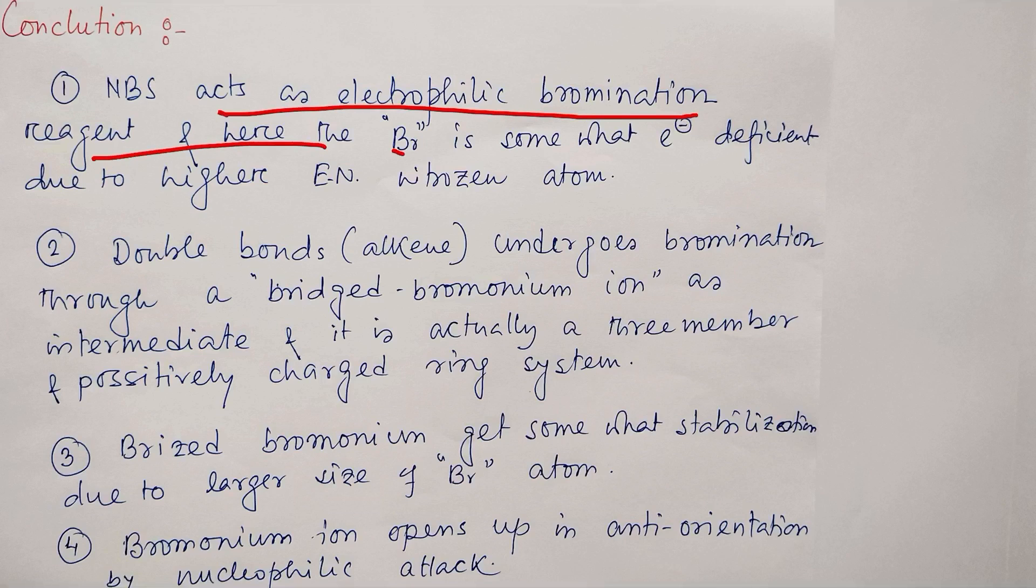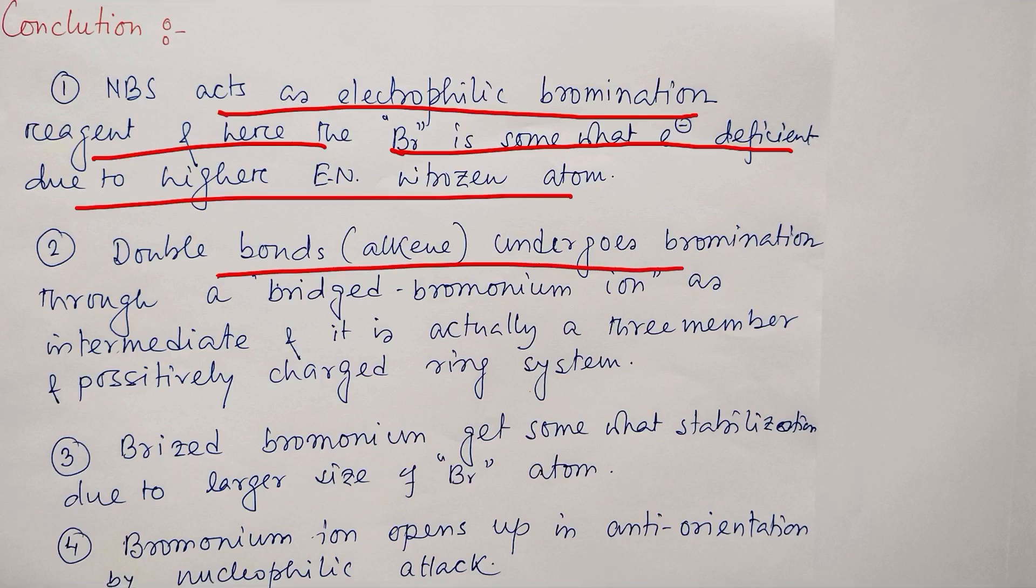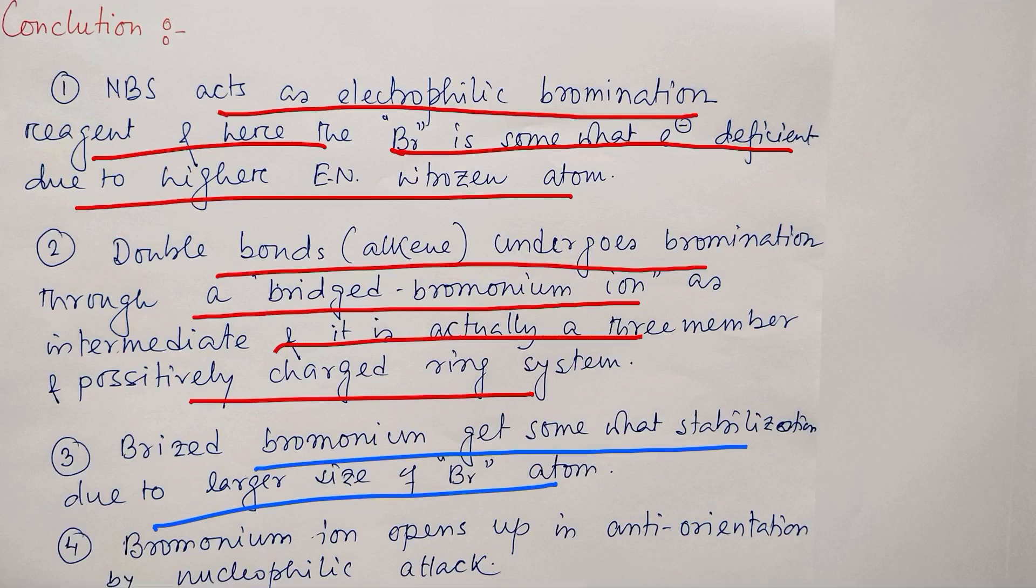What have you learned today? We have learned that NBS acts as an electrophilic bromination reagent, and here bromine is somewhat electron-deficient due to higher electronegative nitrogen atom. Double bonds like alkenes can undergo bromination through bridge bromonium ion as an intermediate. By the way, I have discussed halogen addition to double bonds. You may visit that lecture for your better understanding. This happens through a three-membered charged ring system. Bridge bromonium ion gets somewhat stabilized due to the larger size of bromine atom.